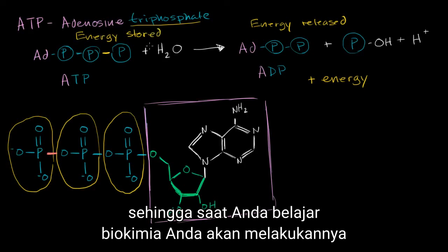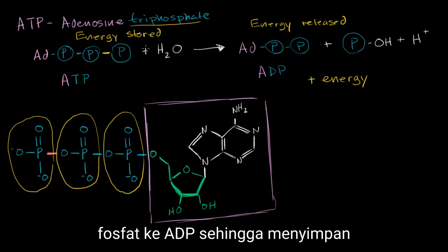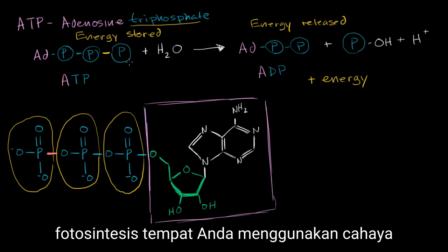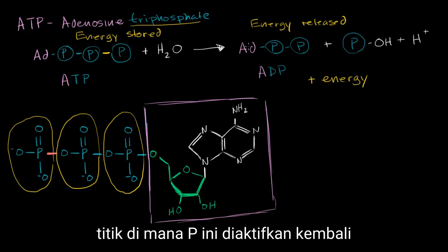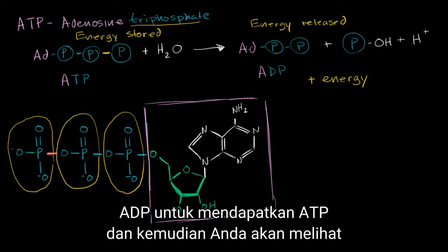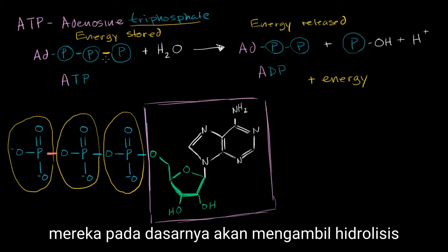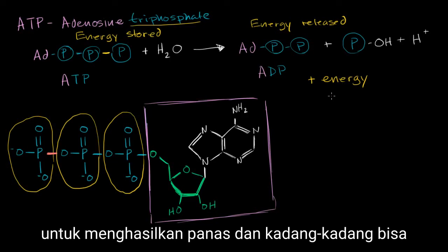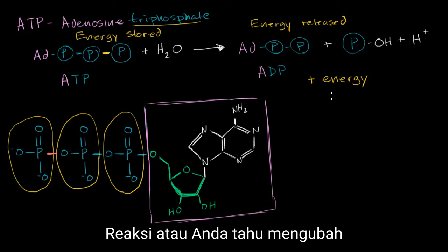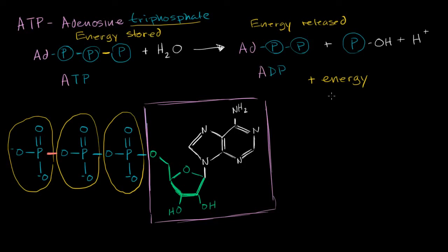And so as you study biochemistry, you will see time and time again energy being used in order to go from ADP and a phosphate back to ATP — that stores the energy. You'll see that in things like photosynthesis, where you use light energy to put the phosphate back onto ADP to get ATP. And then you'll see that when biological systems need to use energy, they'll use the ATP — hydrolysis will take place and they'll release that energy. Sometimes that energy could be used just to generate heat, and sometimes it can be used to actually forward some other reaction, or change the conformation of a protein, whatever might be the case.